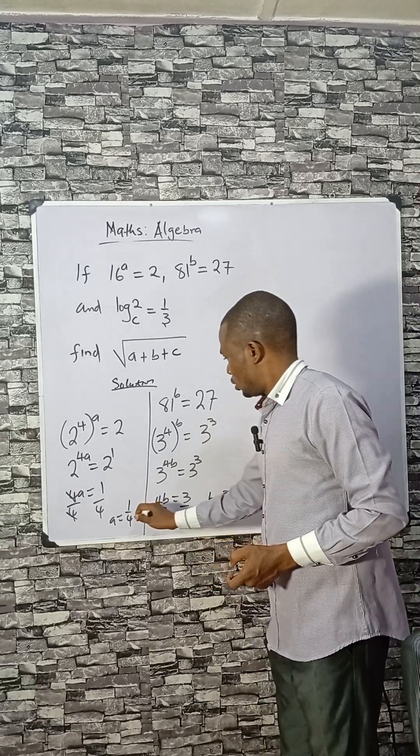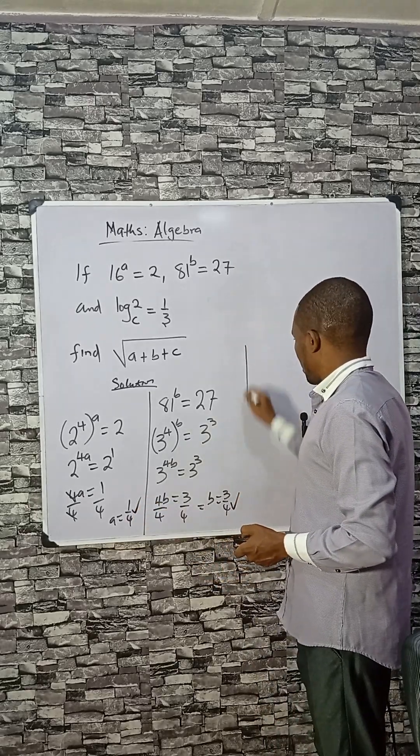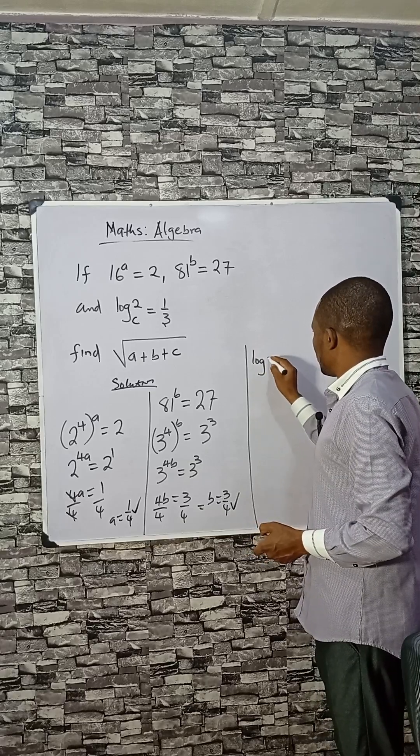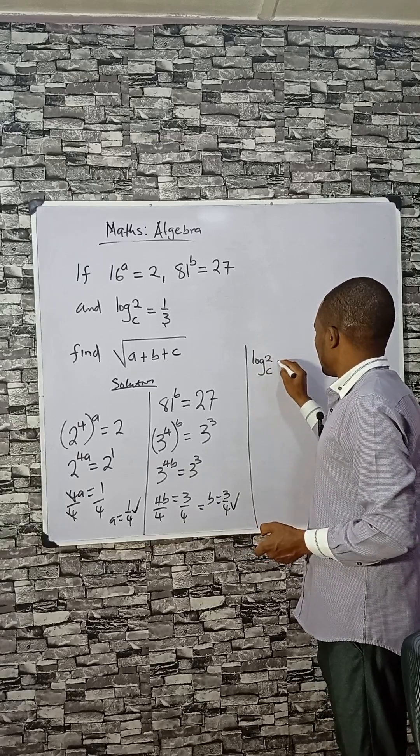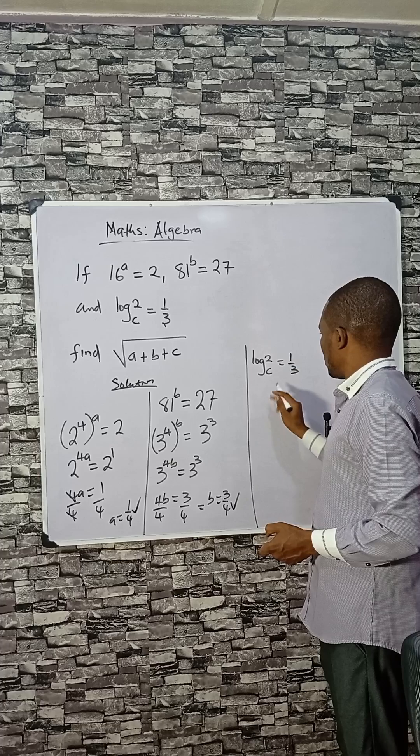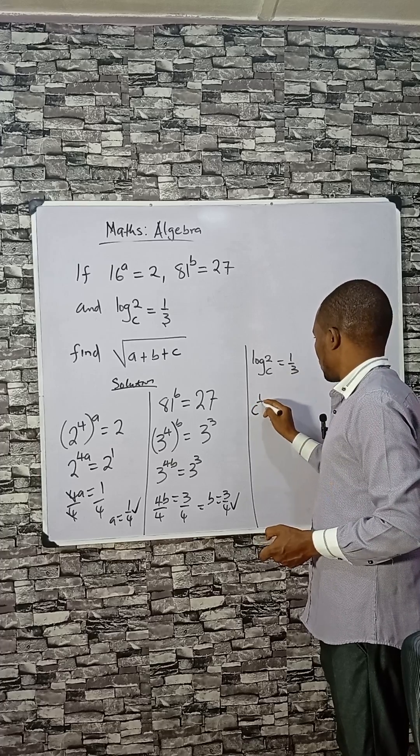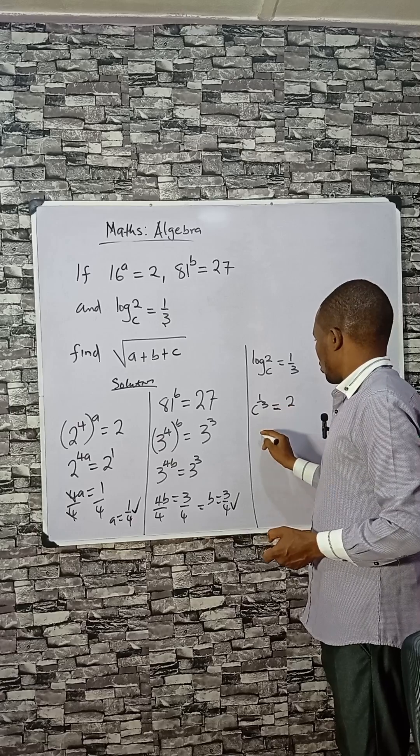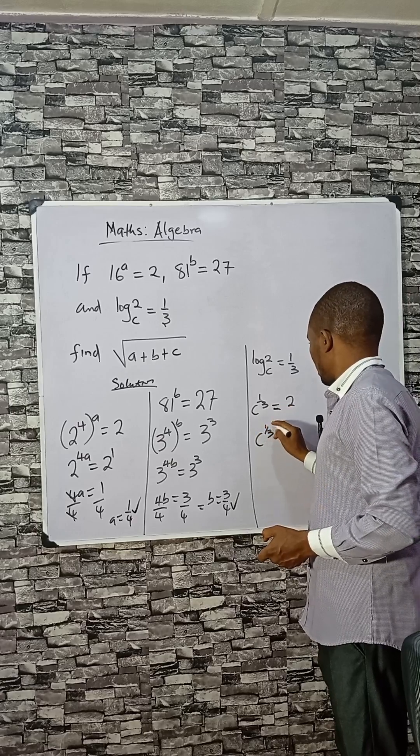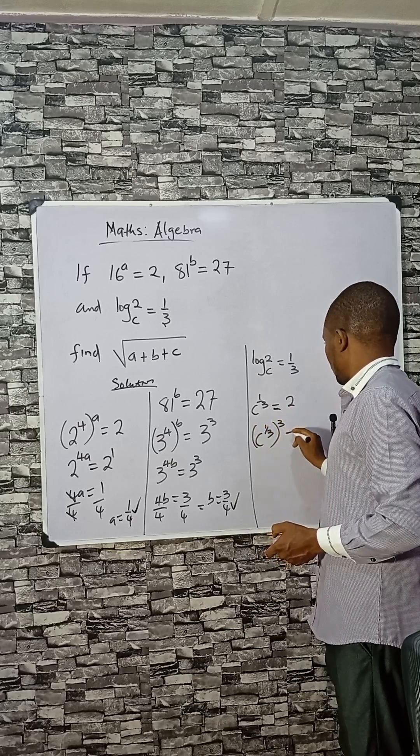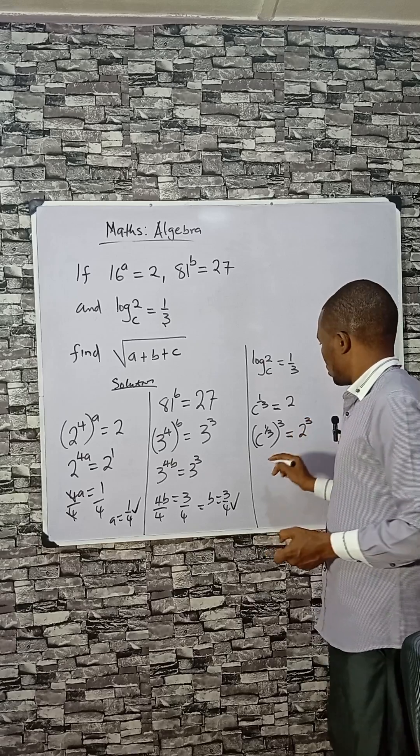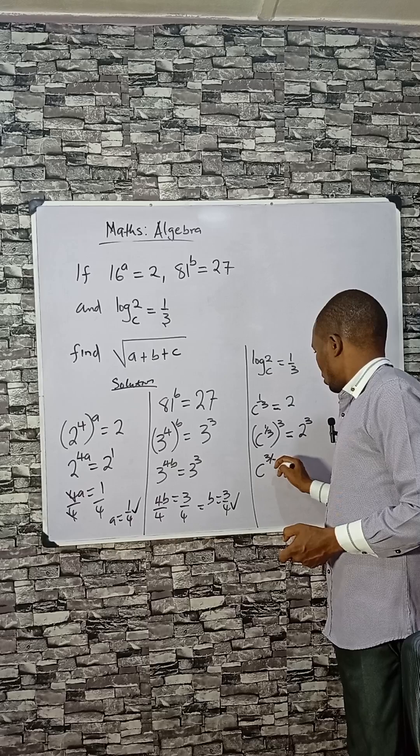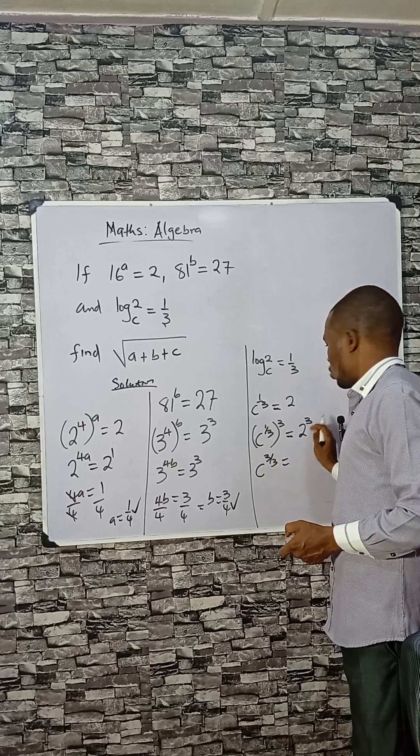This is a, this is b. Now let's check c. c comes with log base 2 of c equals 1 over 3, so c raised to power 1 over 3 equals 2. What if we raise both sides to power 3 to cancel, so that we can have c raised to power 3 divided by 3. This equals 2 raised to power 3, which is 8. So c equals 8.